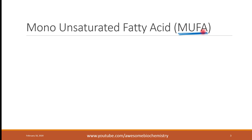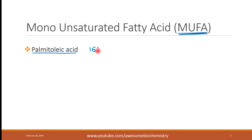The first example is palmitoleic acid. This is a 16-carbon long compound. In the shorthand notation, we first write the number of carbons, then a colon, then the number of double bonds. Since this is a monounsaturated fatty acid, the double bond count is 1. In brackets we write the location of the double bond using delta notation, counting from the carboxyl (C=O) side. There is a double bond between the 9th and 10th carbon, so we write delta 9.